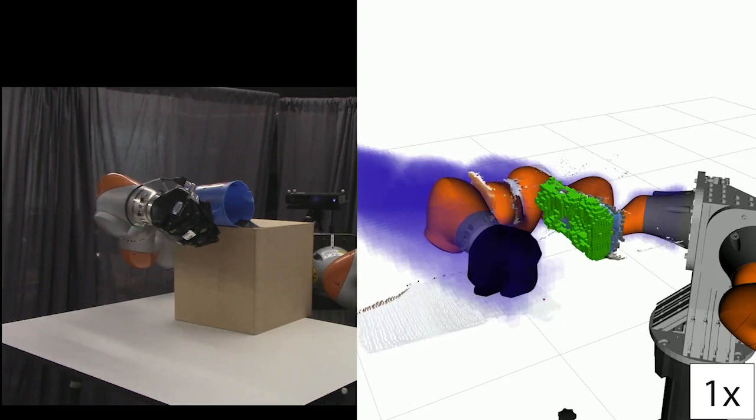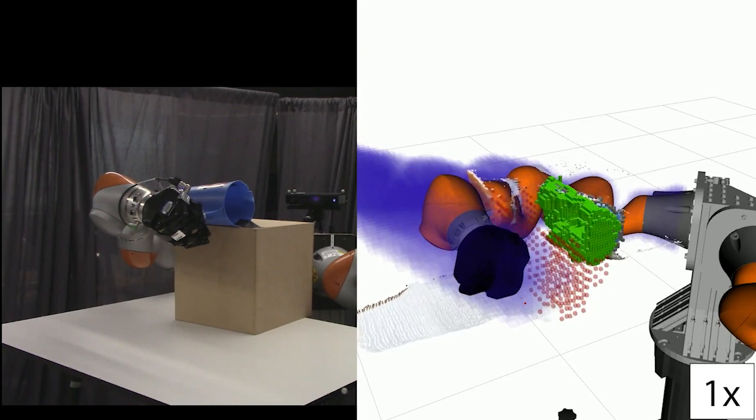After the robot contacts the pitcher, the completed shapes grow, filling out the handle region.